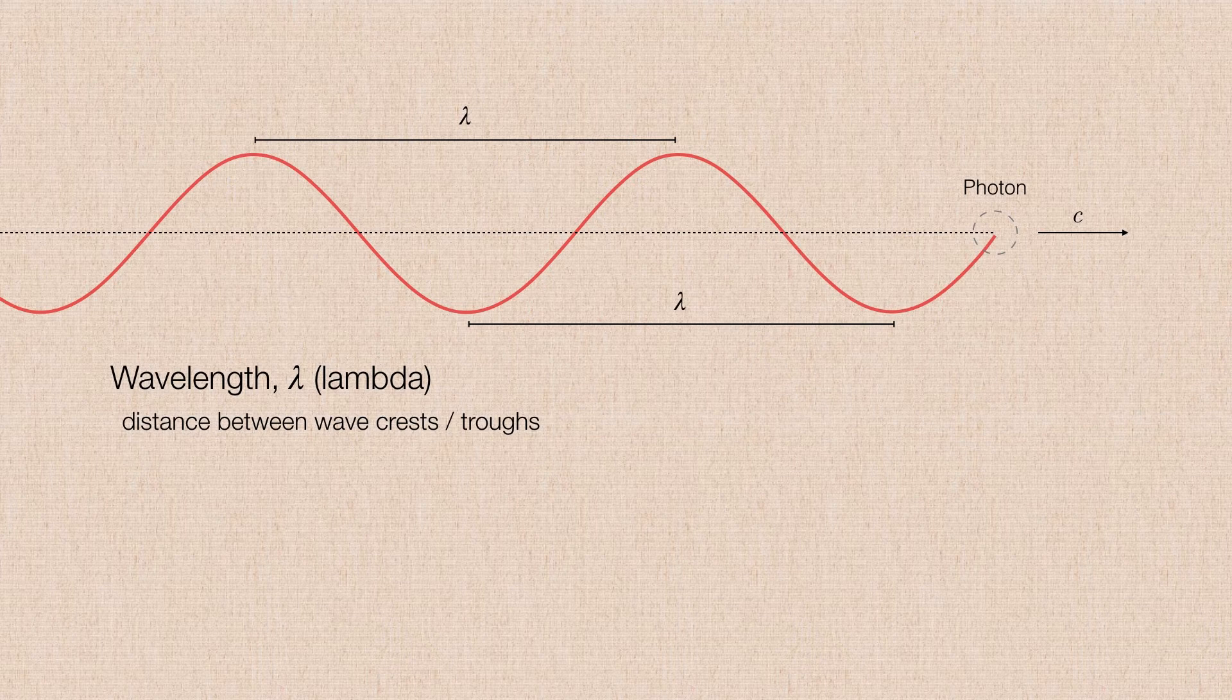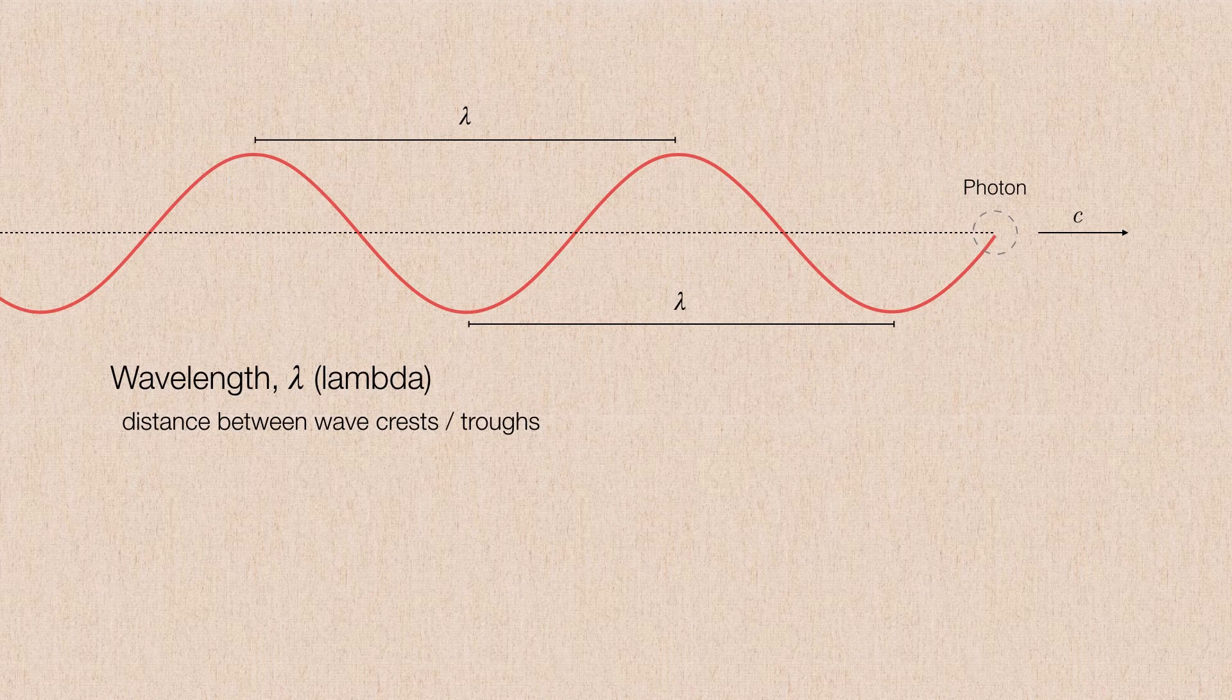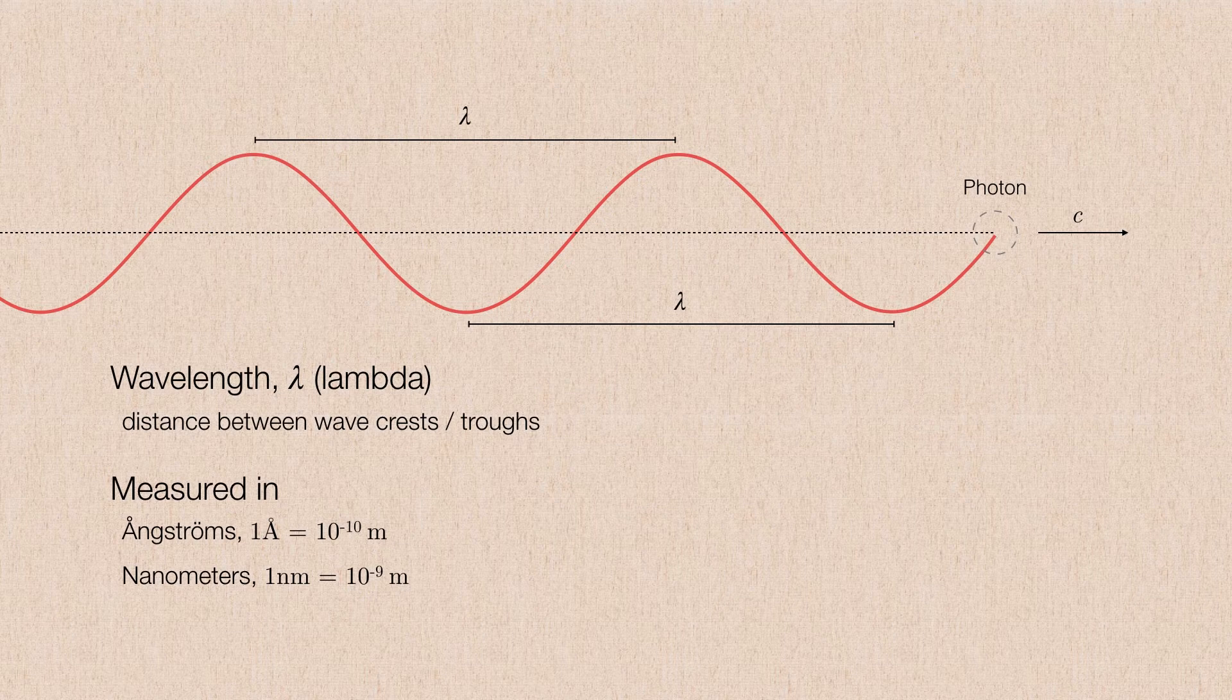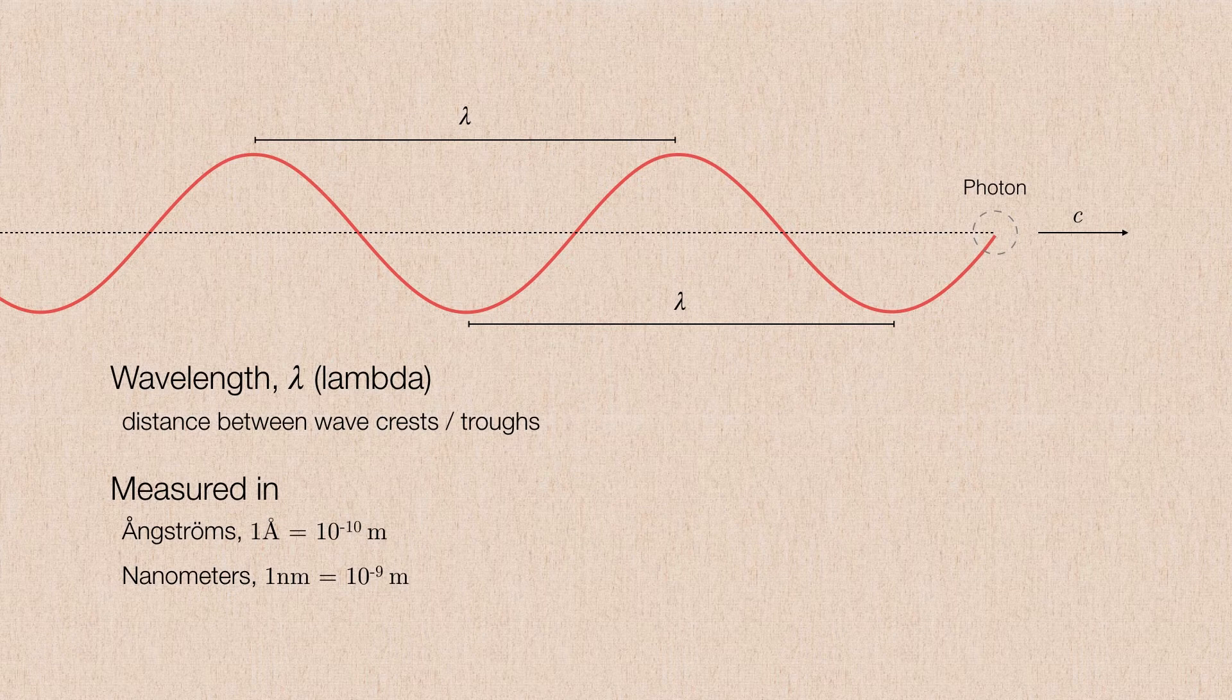Now because this is a physical distance, we need to measure this in some fraction of a meter or something else. So we adopt usually one of two measuring units. The first unit we'll talk about is the angstrom. So one angstrom is equal to 10 to the minus 10 meters. Now keep in mind, 10 to the minus 10 meters, that's an extremely tiny distance. That's one ten billionth of a meter.